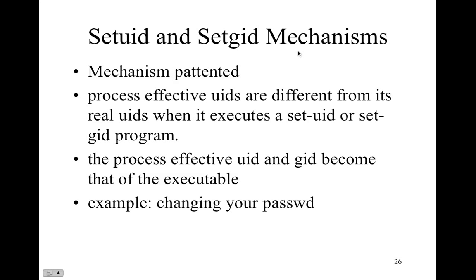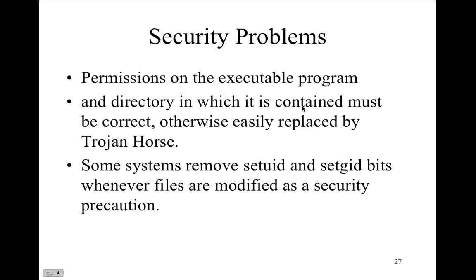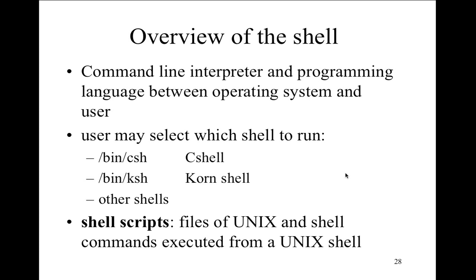The set user ID and set group ID mechanisms allow you to change the group ID or user ID for a process, directory, or user — changing your own password is an example. Security problems with Unix: if permissions are set correctly, there aren't many. Permissions must be correct on executable files and directories — otherwise it's easy to replace Trojan horses in directories. Some systems remove the set ID and set GID bits whenever files are modified as a security precaution.